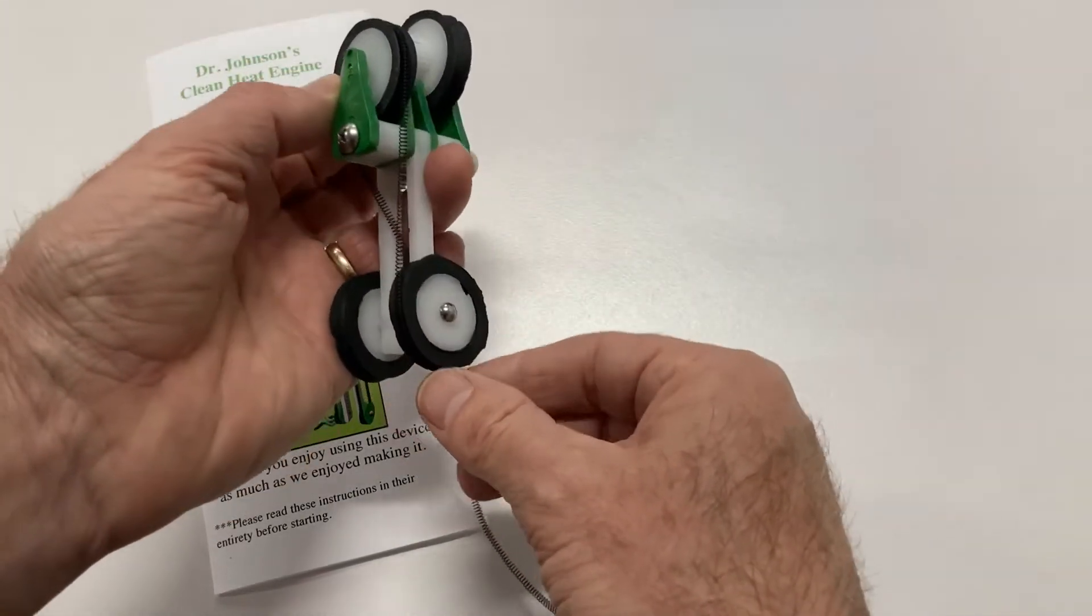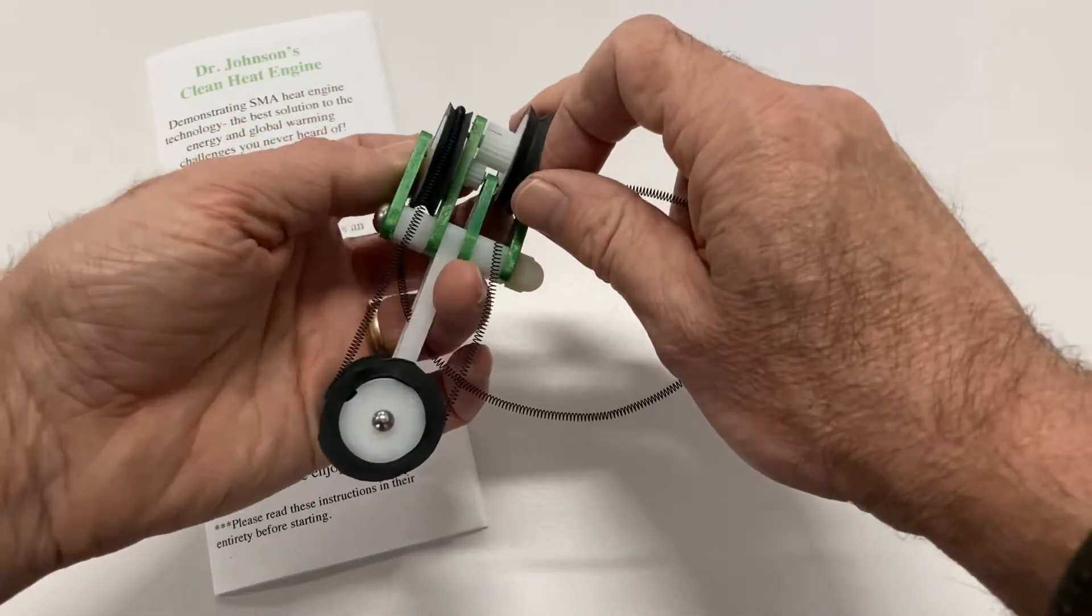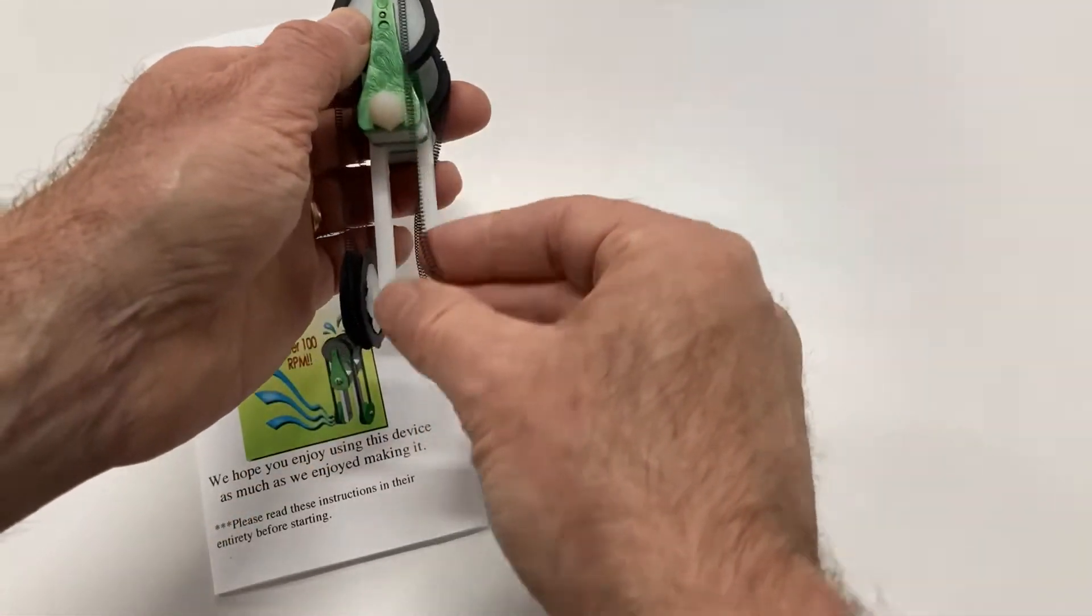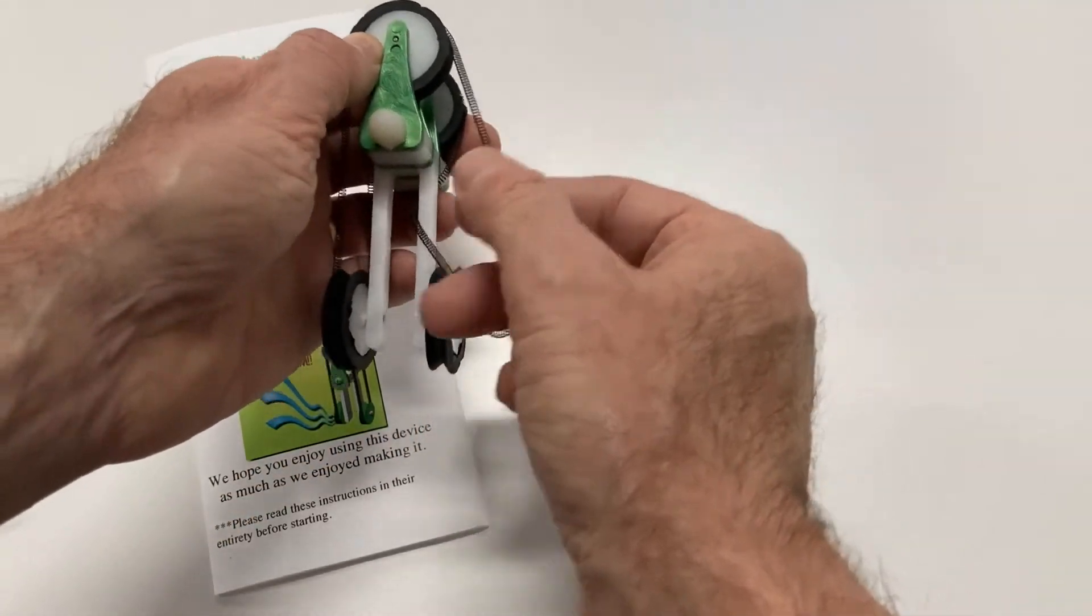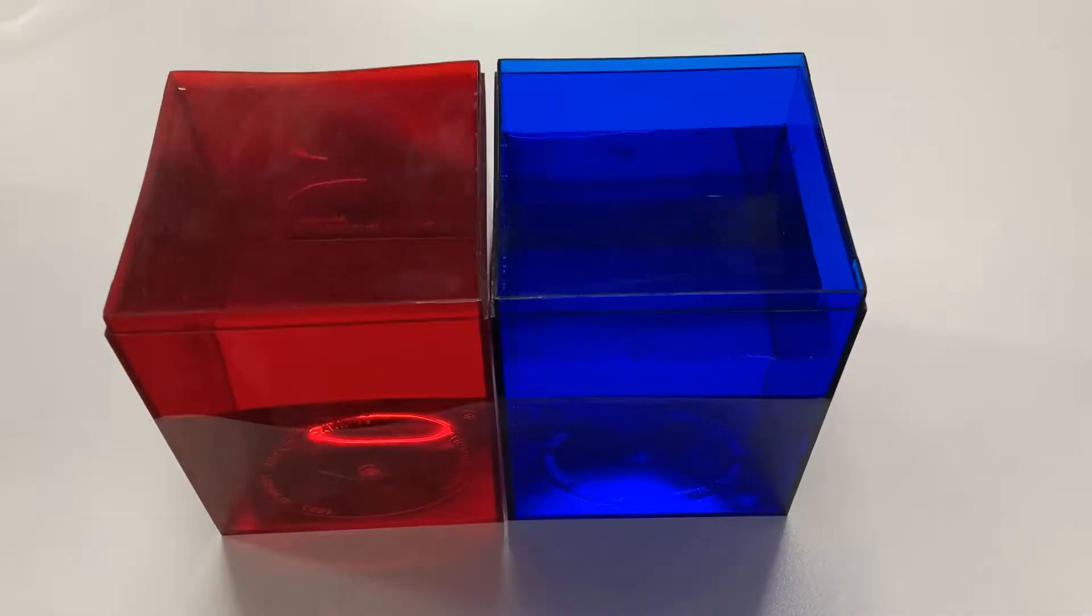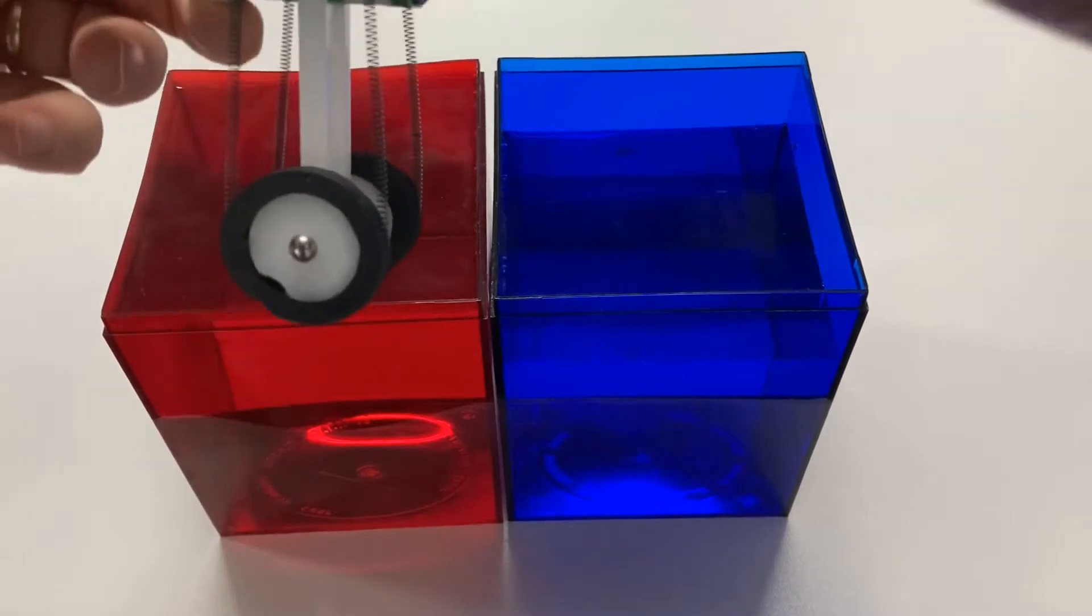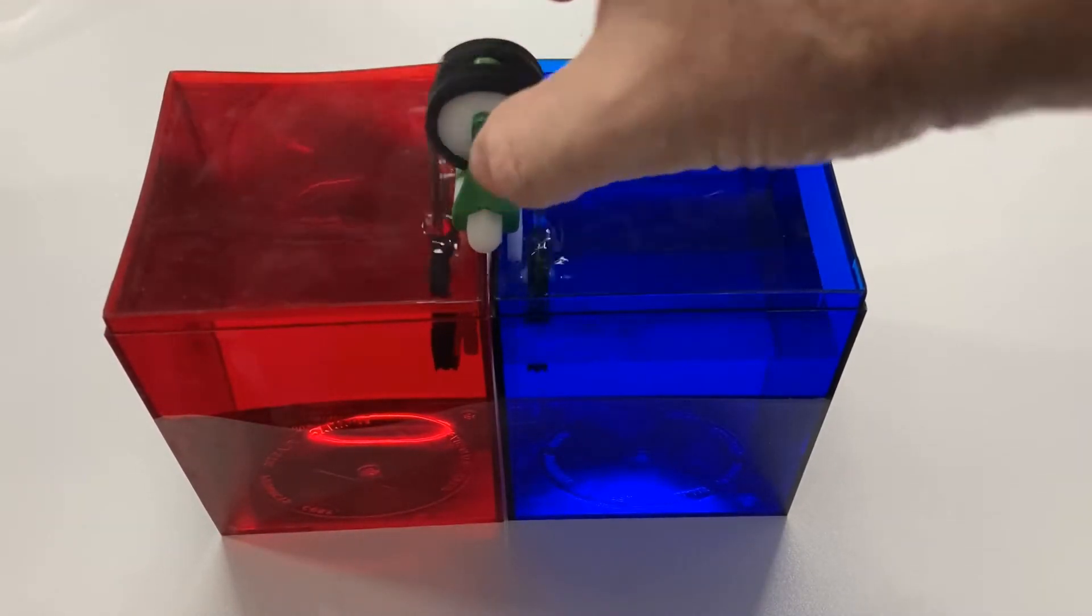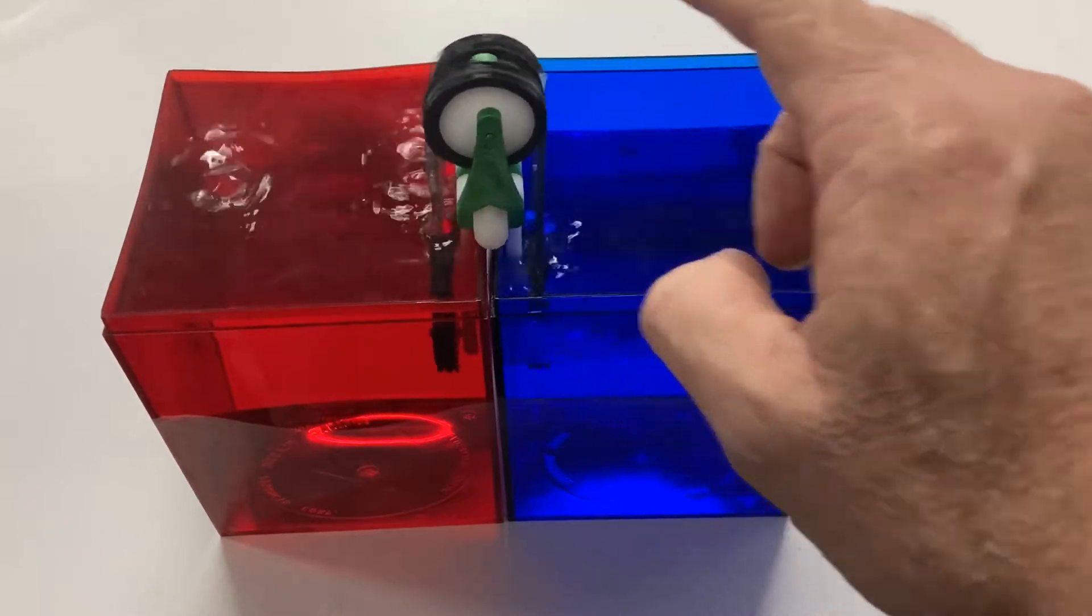Next I wrap the shape memory alloy spring around the pulleys. And now I simply insert the legs of the engine into the two tanks. With a little coaxing, off it goes.